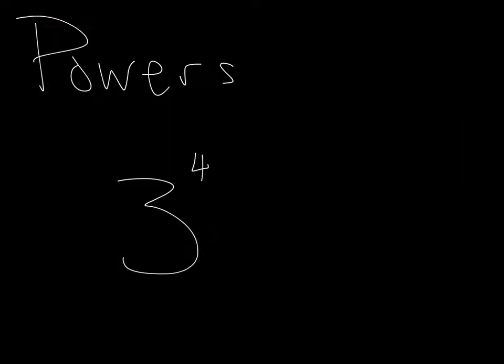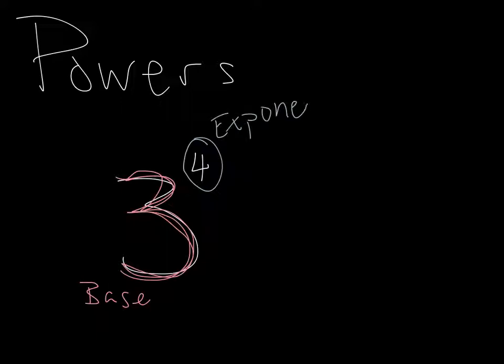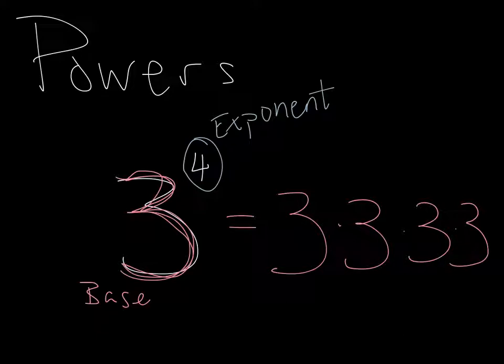The last thing we talk about before we dive into the examples is something called a power. Big three with a little four—this whole thing is called a power. And the power consists of two different pieces. It consists of a base, which is the three. The three is what we call the base. It's the big number. And the four is what we call the exponent. And powers are another way of writing multiplication. What this power tells us is that we're going to take the number three, the base, and we're going to multiply by itself four times. So this exponent tells us how many times we take this number times itself. So one, two, three, four. Three to the fourth power is equal to 81. It's a shorter way of writing multiplication.